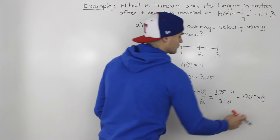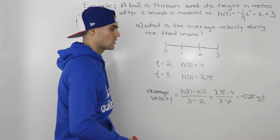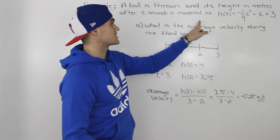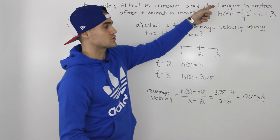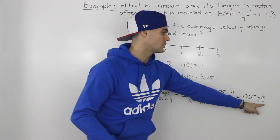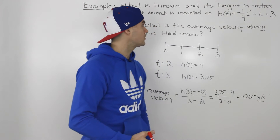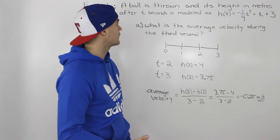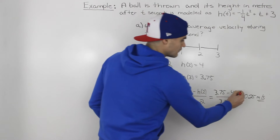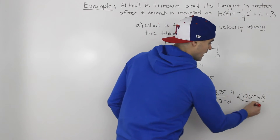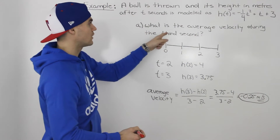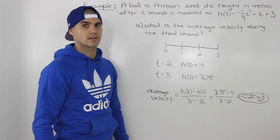Don't forget the units. The rate of change is always the change in the dependent variable — height, measured in meters — per one unit change in the independent variable, which is time measured in seconds. So negative 0.25 meters per second represents the average velocity during the third second.